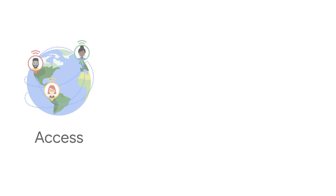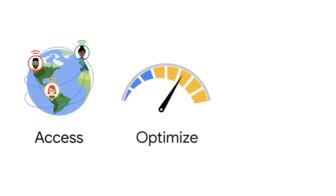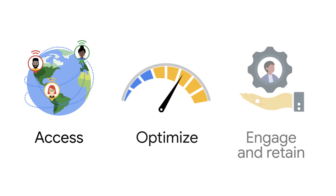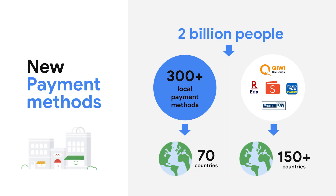Google Play takes a three-prong approach to help you monetize your business. We do that by increasing your ability to access customers around the world, giving you the tools to help optimize your go-to-market approach, and supporting your efforts to engage and retain your customers on Play. Access means users are ready and able to pay for your apps and games. Play users now have access to more than 300 local payment methods in over 70 countries, and international cards in over 150 countries across the world.